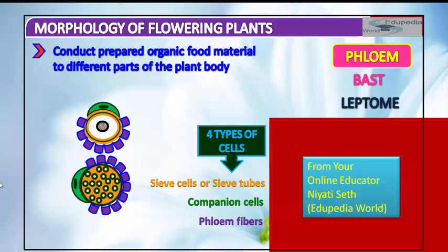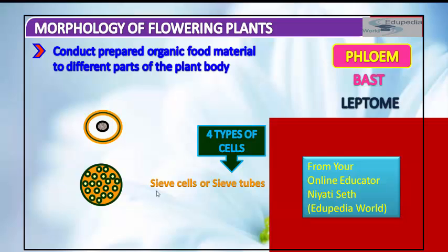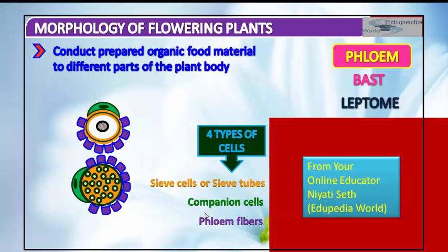At maturity, phloem fibers lose their protoplasm and become dead. Phloem fibers of jute, flax, and hemp are used commercially. The first-formed primary phloem consists of narrow sieve tubes and is referred to as proto-phloem, while the later-formed phloem has bigger sieve tubes and is referred to as meta-phloem.